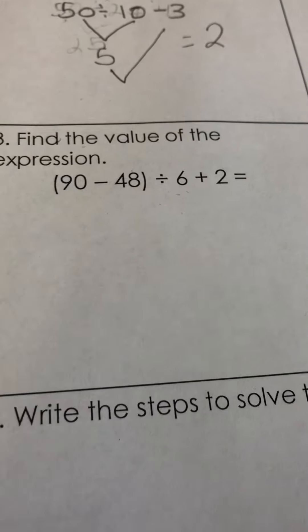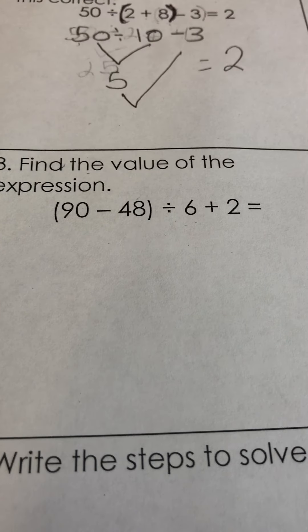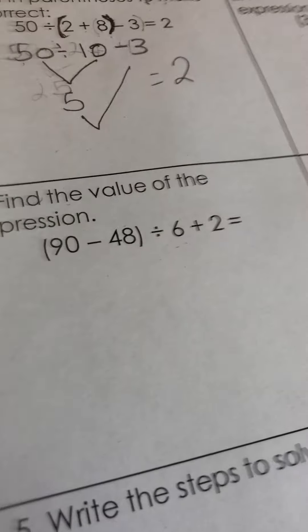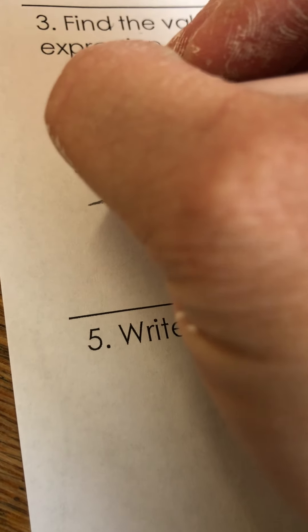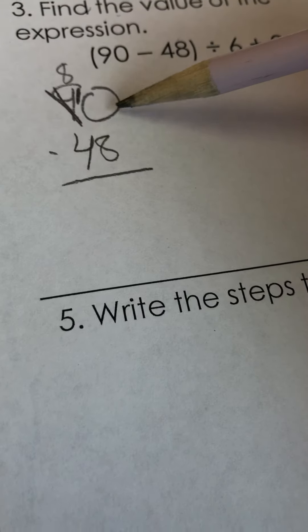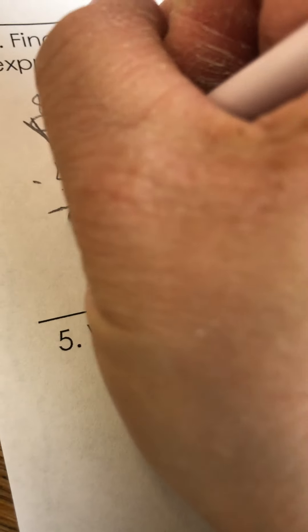Find the value of this expression - again I'm going to do the parentheses first. 90 minus 48. So I'm going to write that up and down because that's easier for me to subtract. I'm going to borrow here, change this to 8 and this to 10. 10 minus 8 is 2. 8 minus 4 is 4.